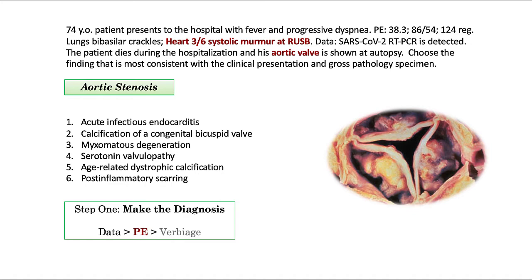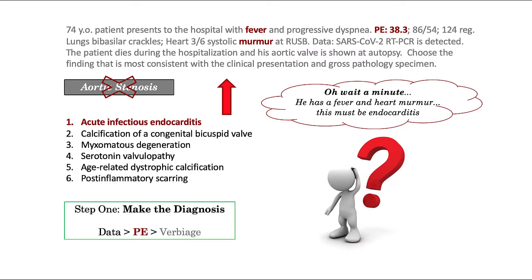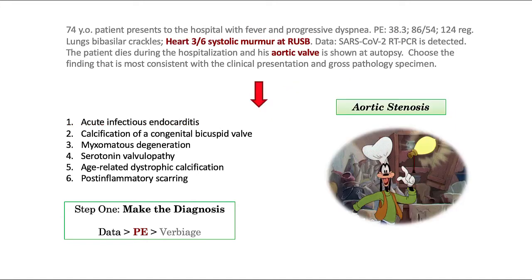But this is what students do all the time. They look at the answer options, and then they let the options dictate the stem — oh wait, he has a fever and a heart murmur, this must be endocarditis. But that's not how the game is played. We already made the diagnosis of aortic stenosis and we're going to stick with it. The stem dictates the diagnosis, and not the other way around. Students regularly get beat up by the answer options, but if you just remember the job description of each, you can mitigate the chaos created by the options.